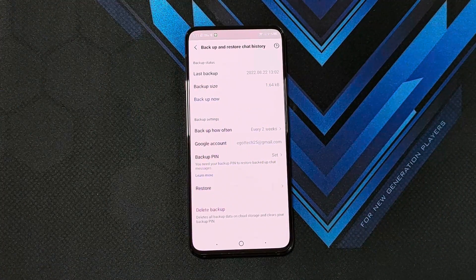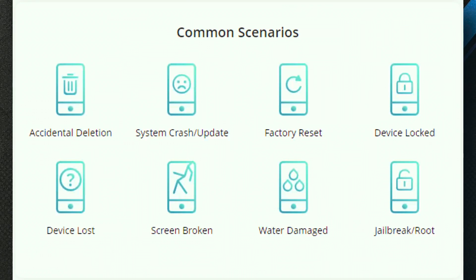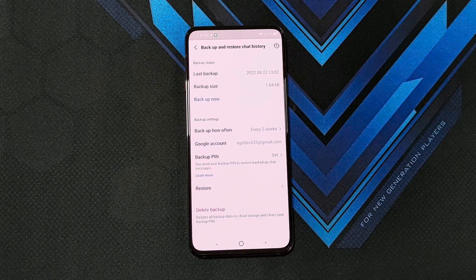When you actually need to use this iMyPhone Line Message Recovery app, some of the common scenarios will be either you accidentally deleted your information or your data — it happens to me a lot of times, more than I care to remember. You can also encounter system crashes when you're updating your phone, whether it's Android or iPhone. If you wanted to do a factory reset and forgot to backup your data, or if you lost your device or, worst case, somebody stole your device — at least you can still get your Line data back.